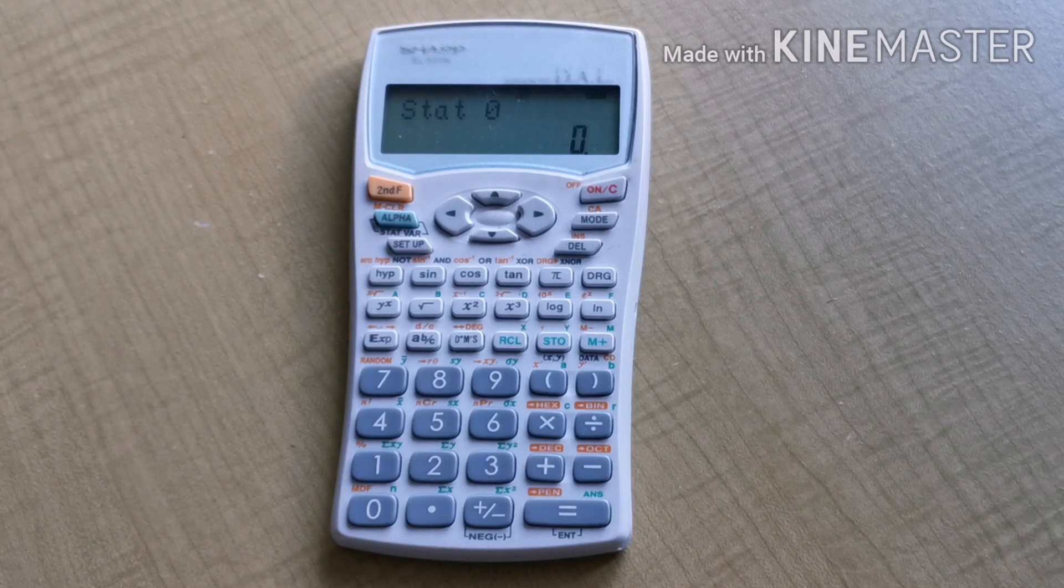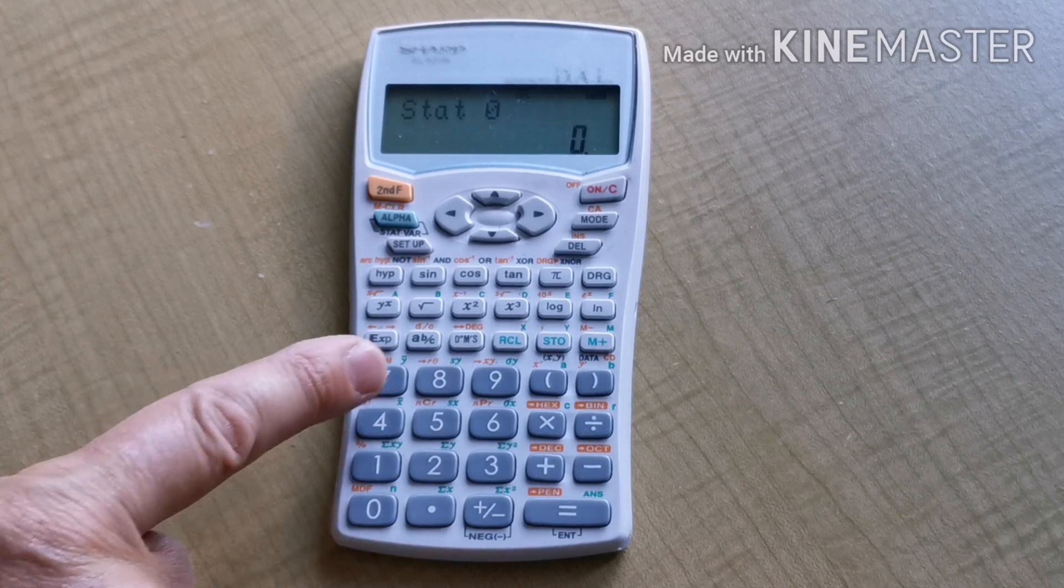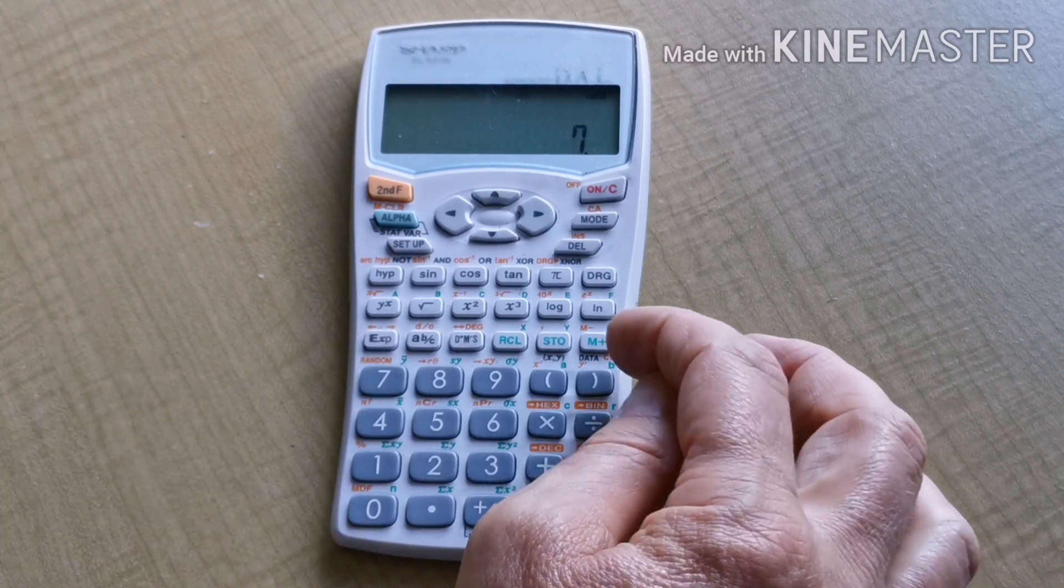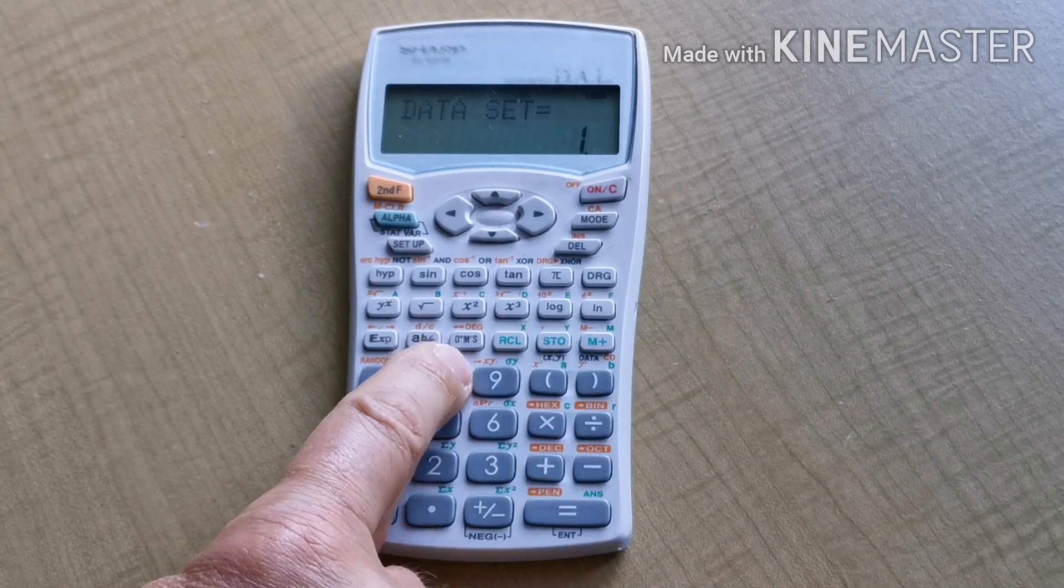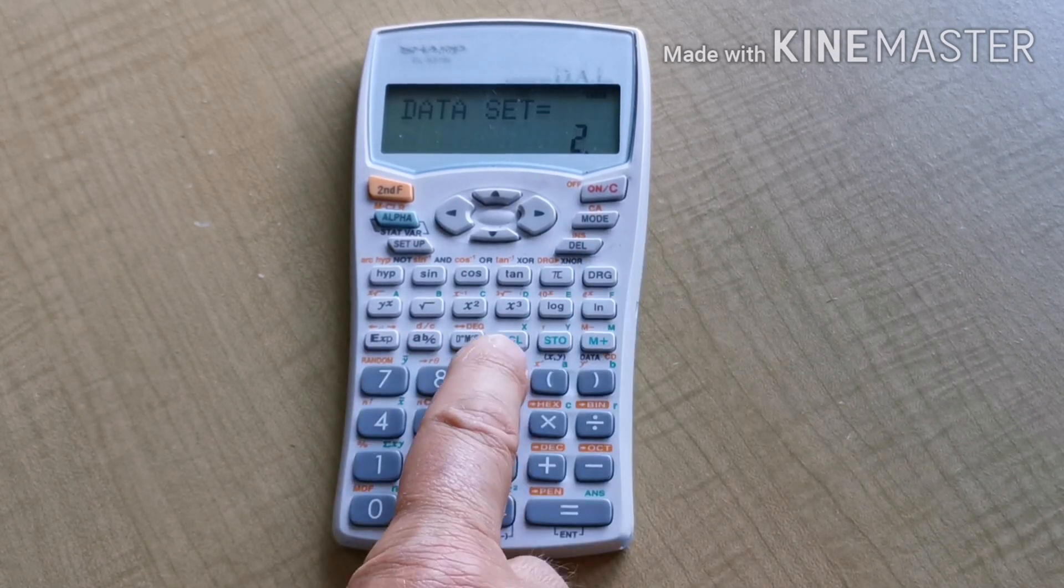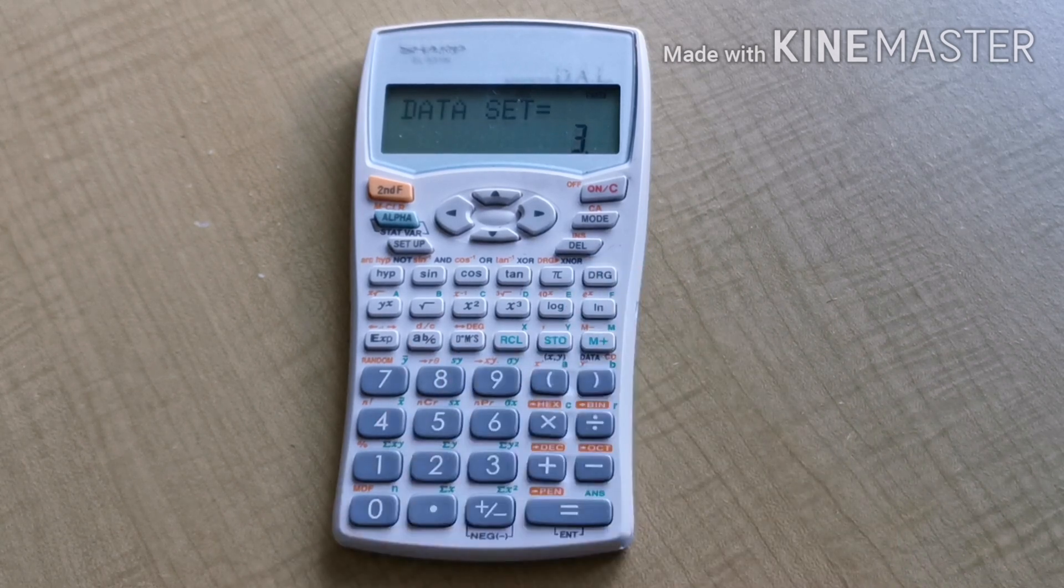Now we're ready to enter the data. Our data consists of the numbers 7, 8, and 9. So I press 7 and then I press the data entry key which has data written beside it. Then I press 8 and I press the data entry key, and I press 9 and I press the data entry key.